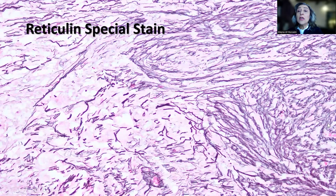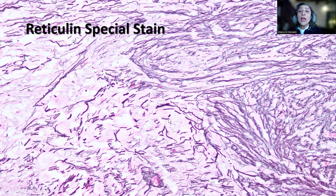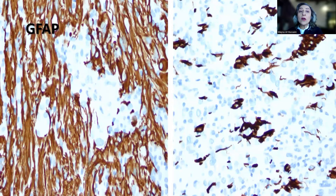Reticulin special stain is very helpful because typically in the grade 2 component of PXA we have increased deposition of reticulin, while you can see the contrast with much less reticulin deposition in areas where we have the rhabdoid morphology or the grade 3 component of the tumor. GFAP was positive in the grade 2 component, beautifully highlighting the microvascular proliferation, while it was much less positive in the area that showed the rhabdoid morphology.